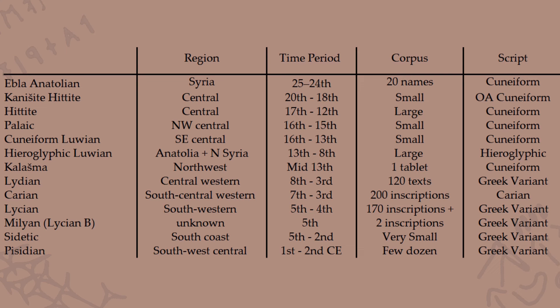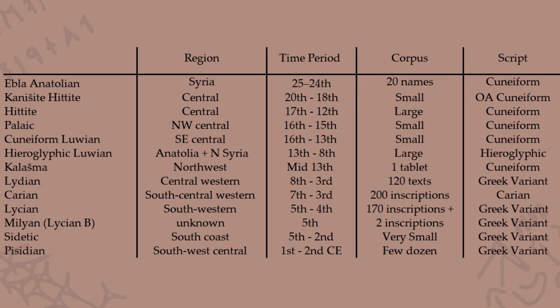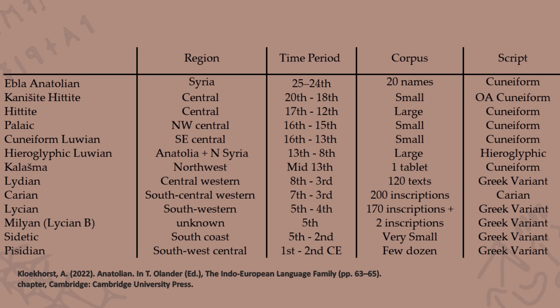Before the discovery of these potential Anatolian names in the Ebla archives, the crown of the earliest attested Anatolian language — and therefore the earliest attested Indo-European language — went to Kanišite Hittite, a dialect of Hittite written in Old Assyrian Cuneiform. The corpus is rather small, dating from the 20th to the 18th centuries BCE. In this table I've presented all of the Anatolian languages in chronological order, 13 of them in total.